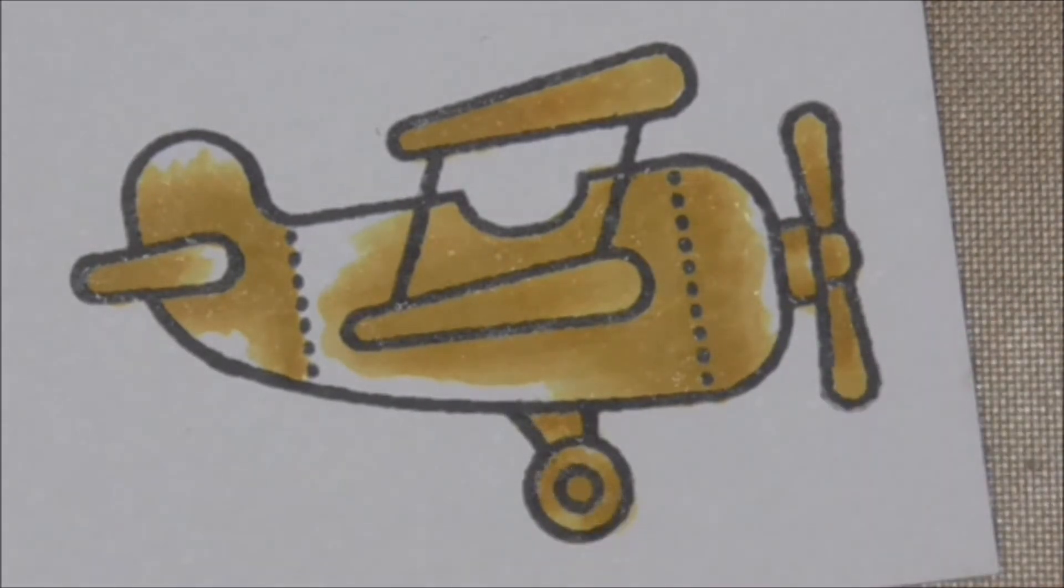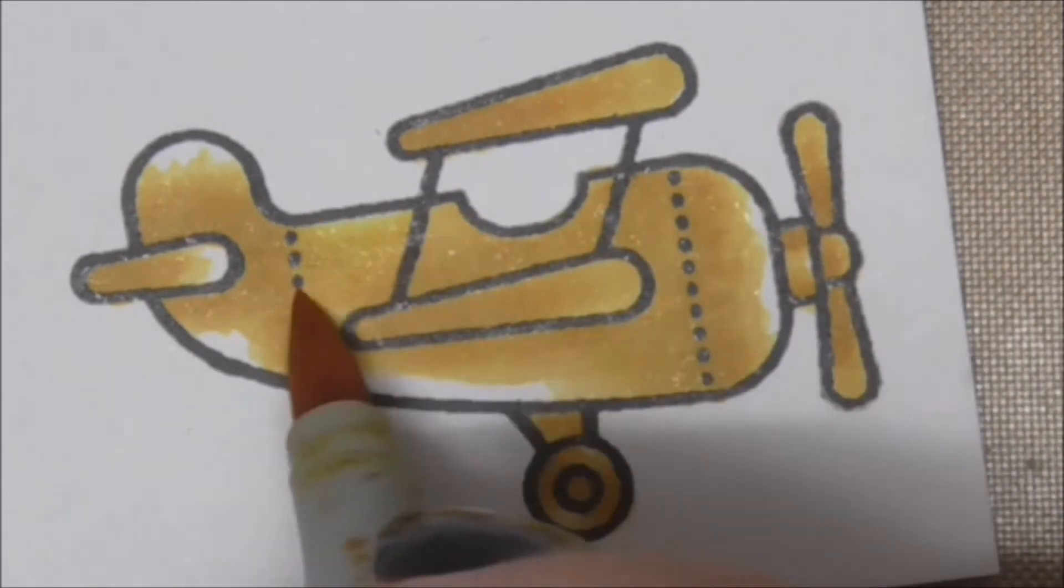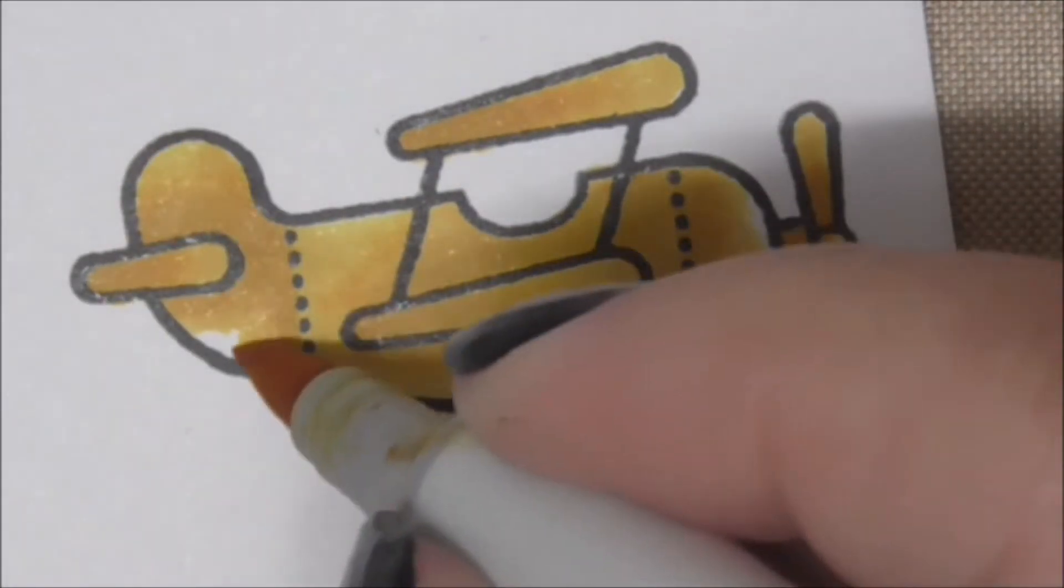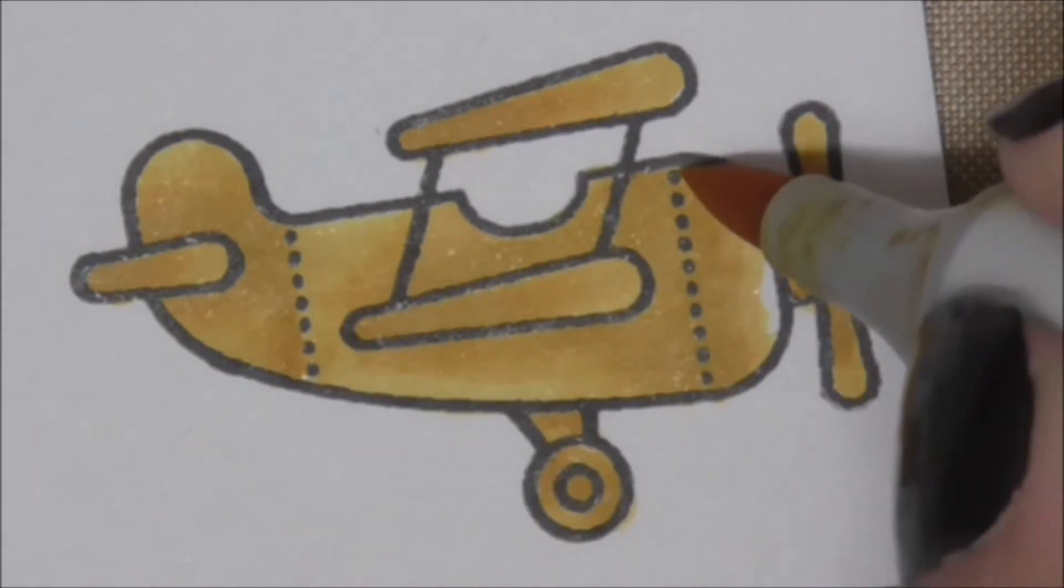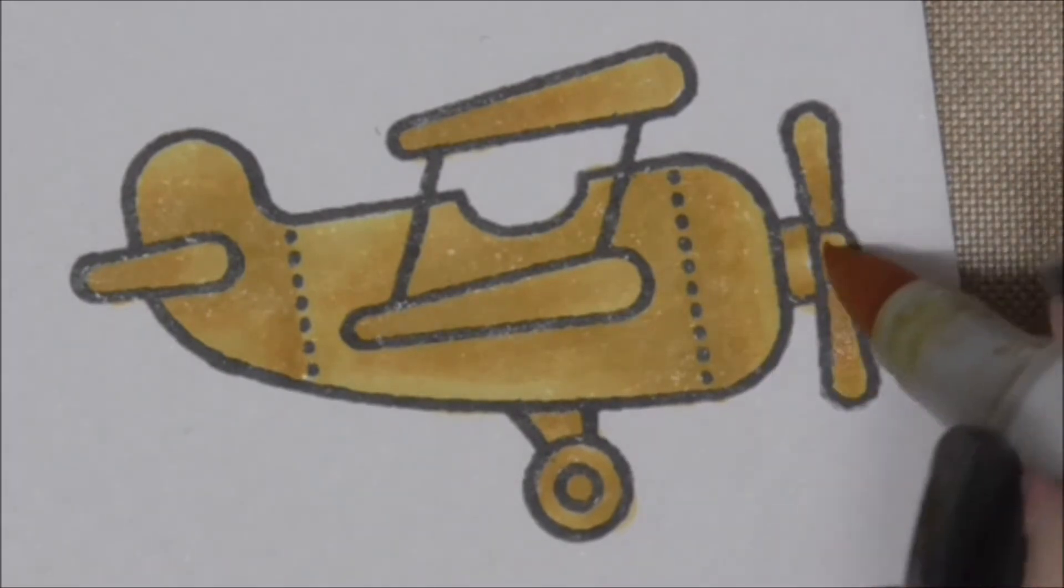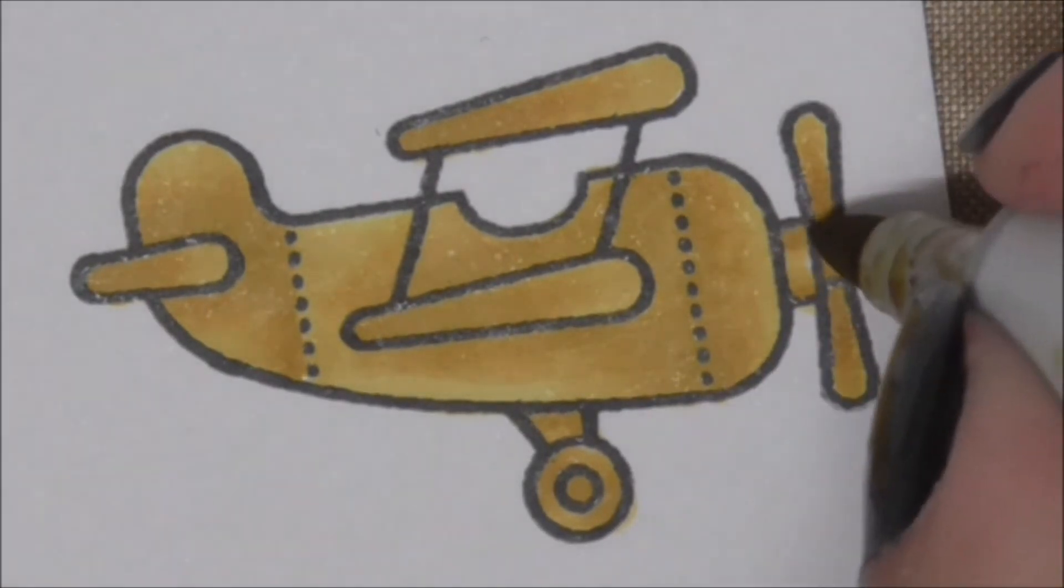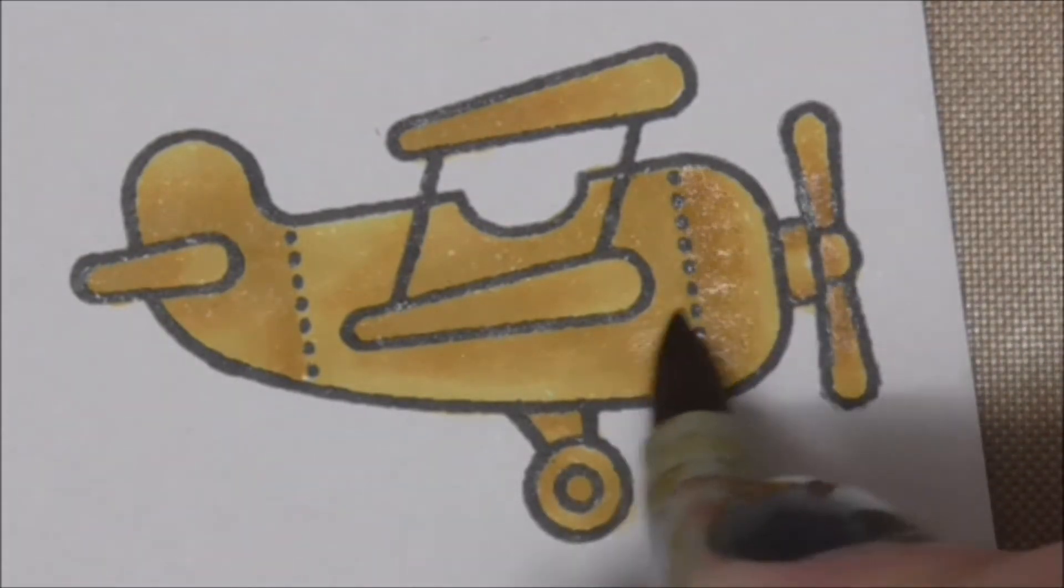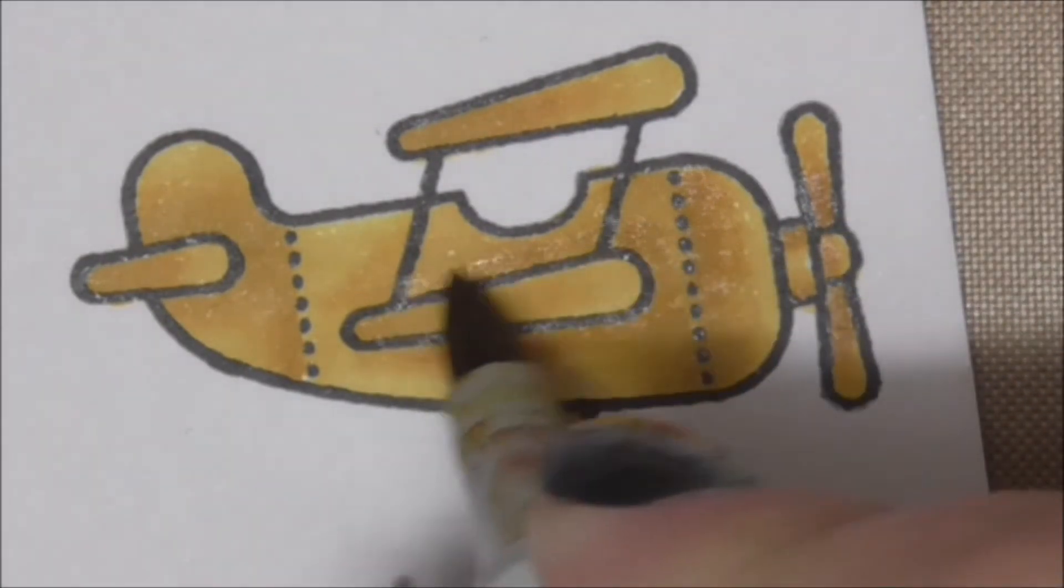One of my favorite things about Copic markers is that I can go back in and strengthen the shadow areas. This is something that I could come back to later in the day, tomorrow, next week, next month, next year and keep working this image. It doesn't all have to be done at once.